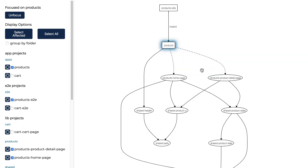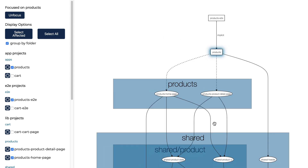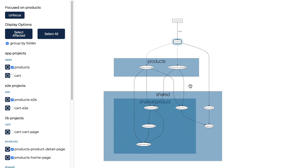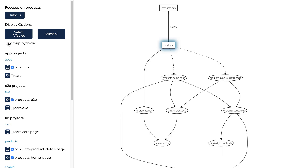Or if I'd like to see which folder each of these projects are in, I can click group by folder. Now these rectangles show which folder each of these projects are placed in. Let me toggle that off.